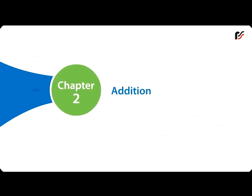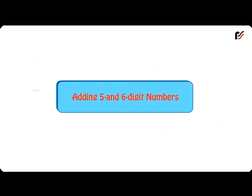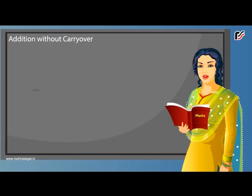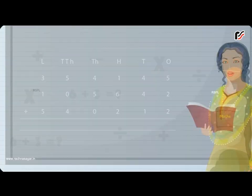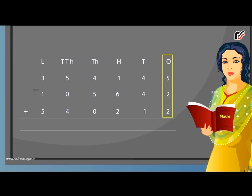Chapter 2: Addition. Adding 5 and 6 digit numbers. Addition without carryover. Let us find the sum of 3,54,145, 1,05,642 and 5,40,212. First, add the ones: 5 plus 2 plus 2 is equal to 9 ones. Write 9 under the ones column.